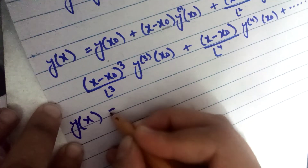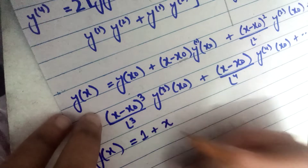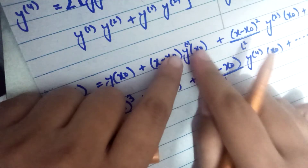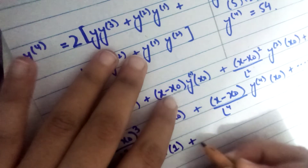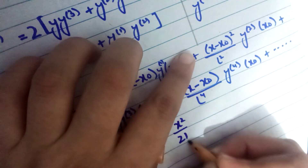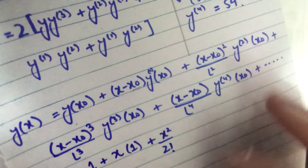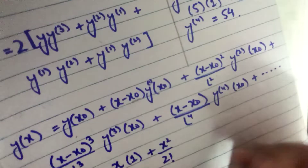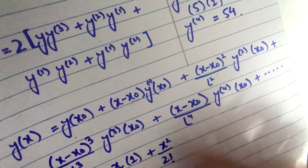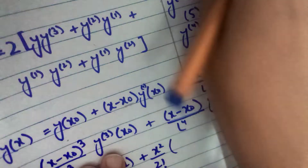Substituting the derivative values: y(x) = 1 + x·(1) + x²/2 · (5) + ... We will not substitute the value of x (which is 0.1) at this moment — we keep x as it is and substitute only in the final step. So the equation becomes 1 + x + (5/2)x² + ...